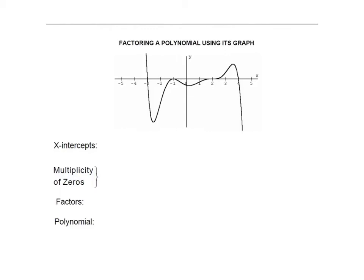Now, factoring a polynomial using its graph means you start backwards — you start with the graph, and from the graph you come up with the factors, zeros, and end behavior, all together, so that you can write the equation of a polynomial. The x-intercepts where the graph crosses are at negative three, negative one, two, and four.